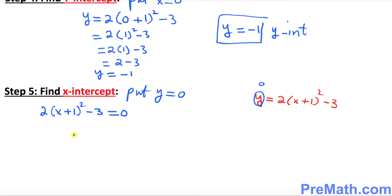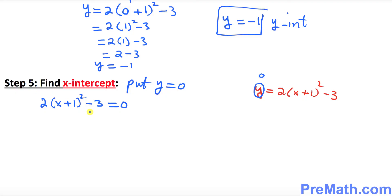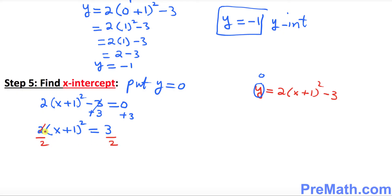First, add 3 to both sides to get 2 times (x plus 1) squared equals 3. Then divide both sides by 2 to get (x plus 1) squared equals 3 over 2, which can be written as 1.5.